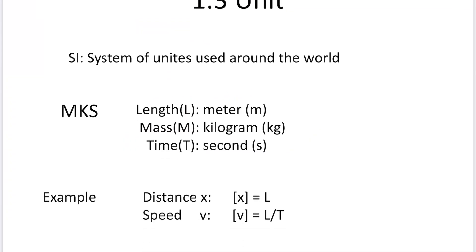The next section is unit. In physics, we use SI units, a system used around the world. In mechanics, we mostly use MKS: meters, kilograms, and seconds. For distance, we use this symbol, and the unit of distance X is L, which is meters. Speed V has unit L divided by T, which is meters per second. This is the end of this section.